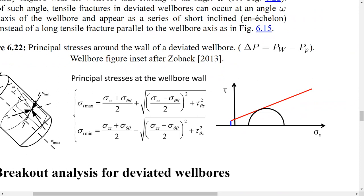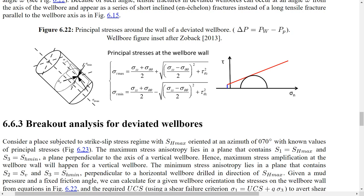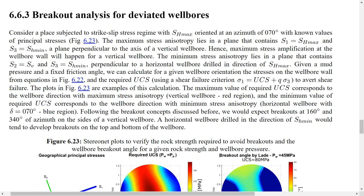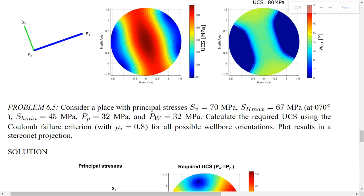You calculate stresses, use those stresses to see if they hit the shear failure line or the tensile failure line, and check what pressure in the wellbore takes you there. It's exactly the same as before with a few more steps. Once you code all that math into a Python or MATLAB script, you can check for breakouts or tensile fractures.